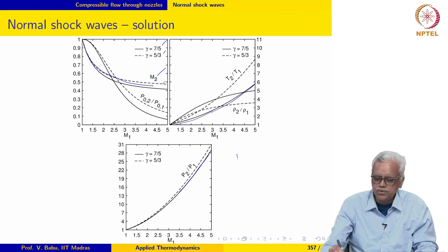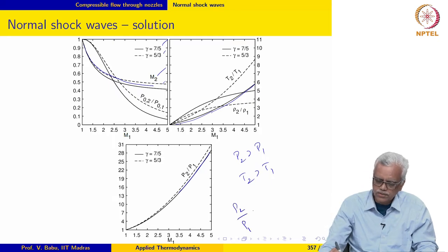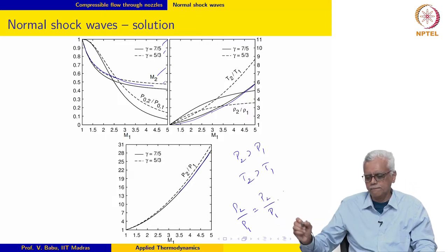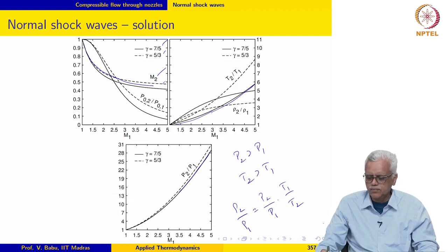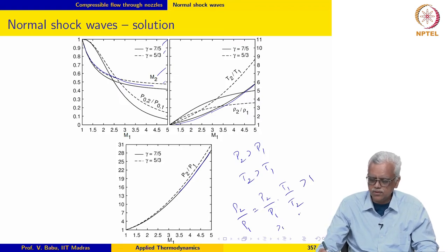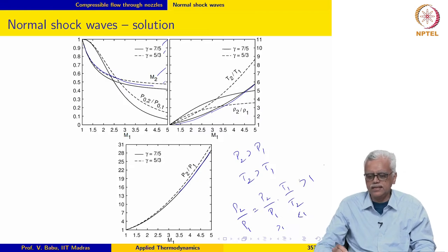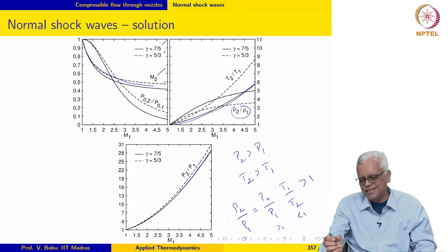Although P2 is greater than P1 and T2 is greater than T1, rho2 over rho1, which equals P2 over P1 times T1 over T2, is still greater than 1. And this quantity also seems to be trending towards an asymptotic value.